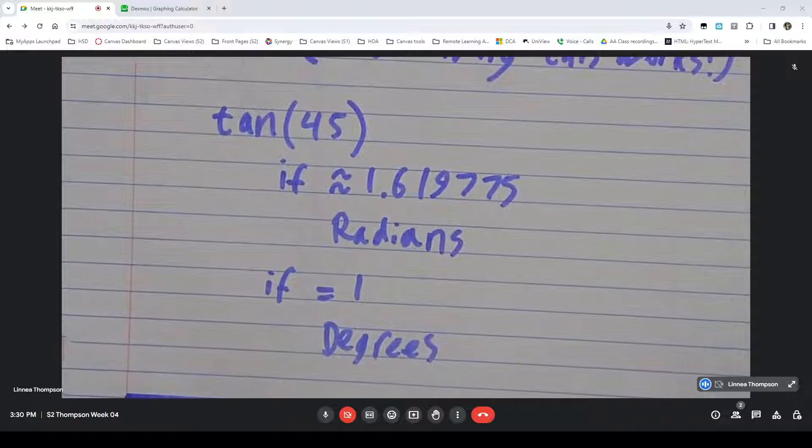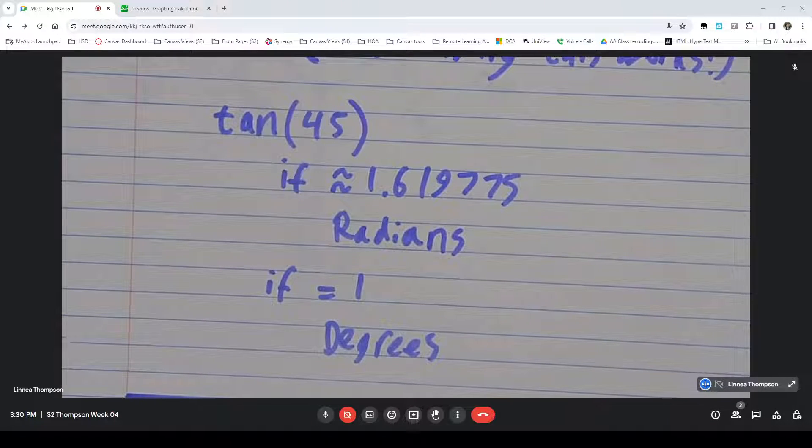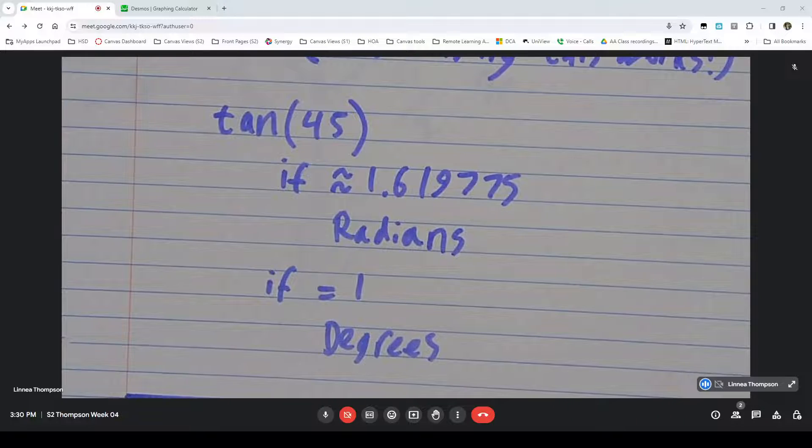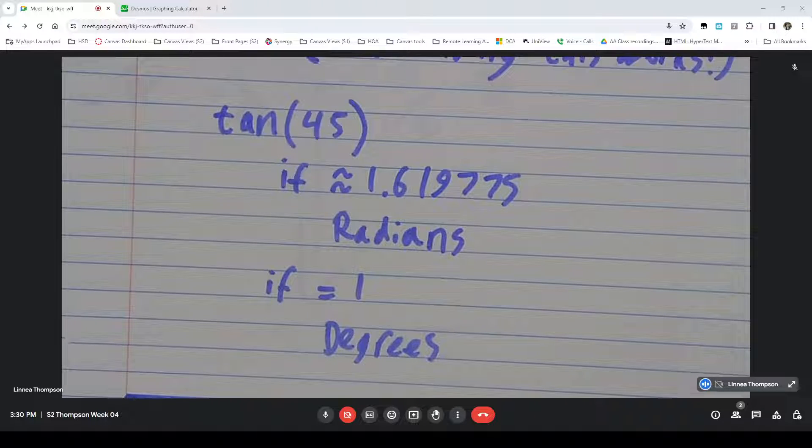And it's important that I'm consistent in which one I'm using when I'm doing a given problem. And that if I'm given measurements I use the same measurements as I'm given. Because otherwise I will be measuring things the wrong size. So that's why it's important to make sure you're in degrees rather than radians.